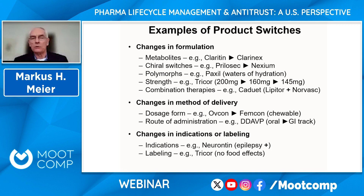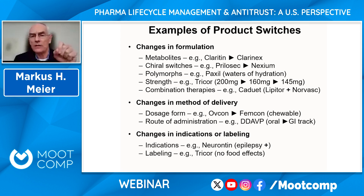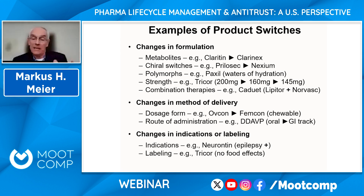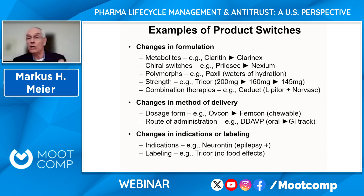Here are some examples of different products using well-known drugs in America — Prilosec, Nexium, Claritin, Clarinex. There are many different ways companies have switched products. Here's the important thing for antitrust enforcers: some of these switches may actually be improvements, and we don't want to discourage improvements. For example, if you only have to take a drug once a day instead of three pills a day, that's probably an improvement we wouldn't want to discourage. Some changes in formulation, method of delivery, or indications in labeling may actually be good innovations. Even if the brand doesn't get a patent for it, it may still make the product better.